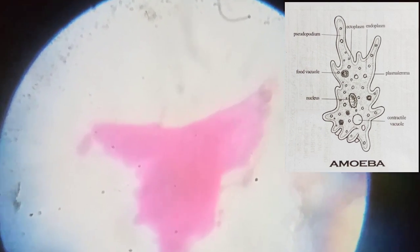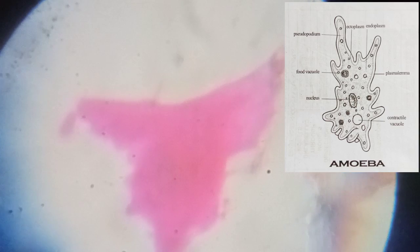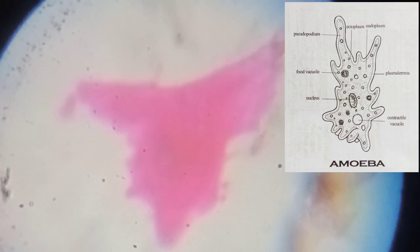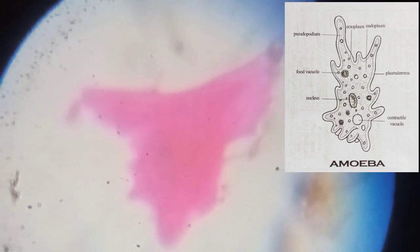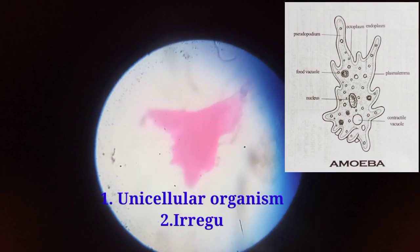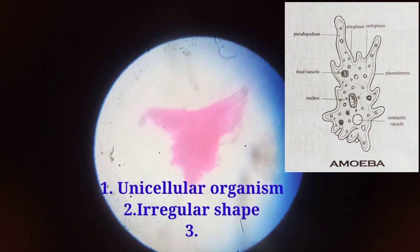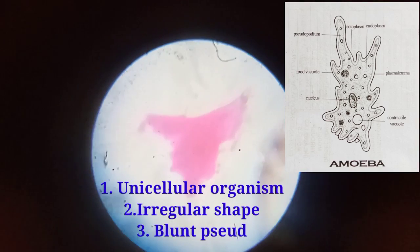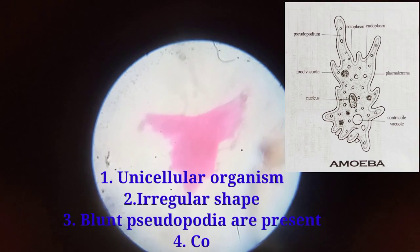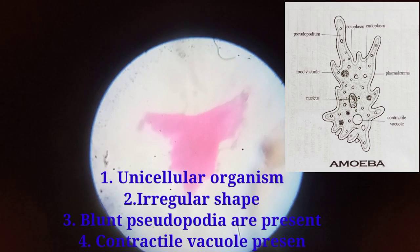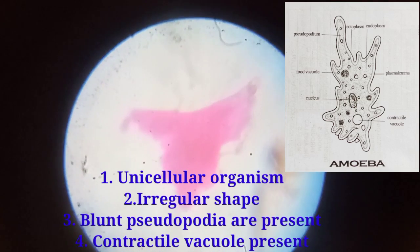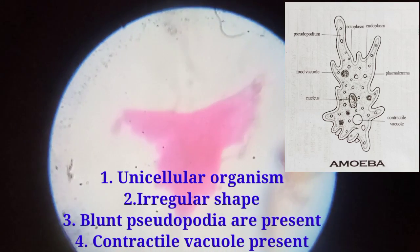In the endoplasm, it contains food vacuoles and contractile vacuoles. It has an irregular shape with blunt pseudopodia present, and contractile vacuoles are also present.